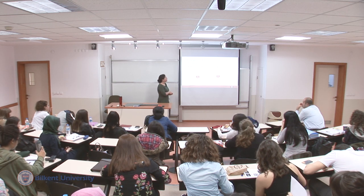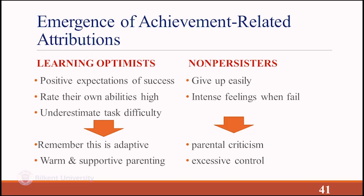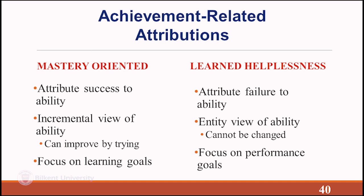In contrast, learned helplessness involves attributing failure to fixed ability — 'I'm not talented at this' — with a view that ability cannot change: you either have it or you don't. These individuals focus on performance goals — how well they're doing — rather than whether they're learning. In childhood, learning optimists have positive expectations, rate their own abilities highly, underestimate task difficulty (which can be adaptive), and usually have warm, supportive parenting. Non-persisters give up easily, feel intense disappointment when they fail, and experience parental criticism and excessive control.